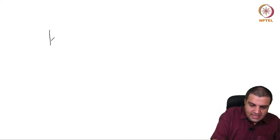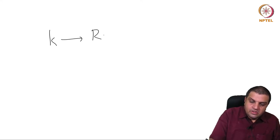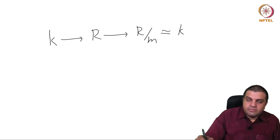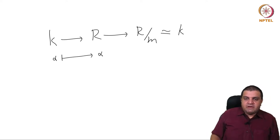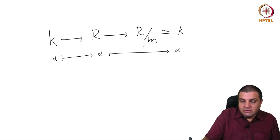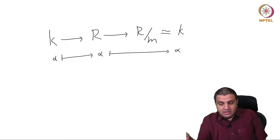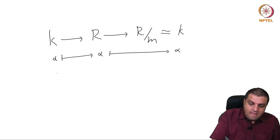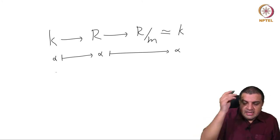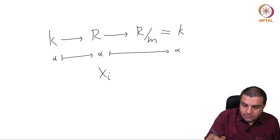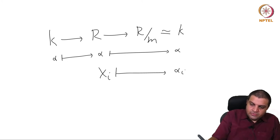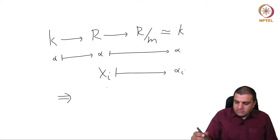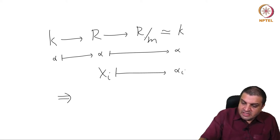Let's look at this. There is K, then there is R, then there is R mod M which is isomorphic to K. An element alpha inside K goes to the constant polynomial alpha and then to alpha itself in R mod M. On the other hand, Xi will go to some alpha_i for any i. So alpha_i is the image of Xi under this map.